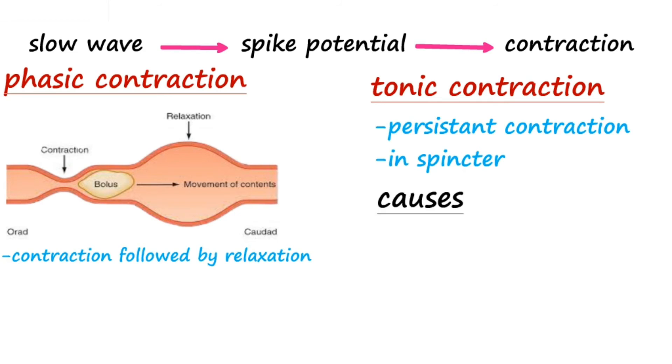The tonic contraction is caused by repetitive spike potentials, hormones or other factors causing continuous partial depolarization, or continuous calcium entry. In this way, contraction is initiated and manifested in our GI smooth muscles.